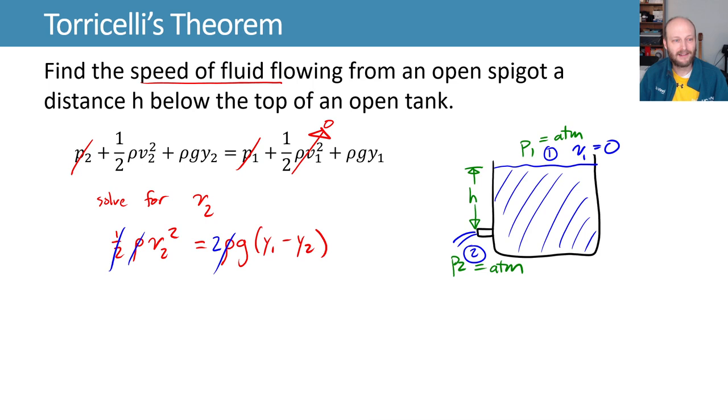We'll move it to the same side, 1 half rho V2 squared is equal to rho G(Y1 minus Y2), and then we'll multiply by 2 and divide by rho to get V2 by itself, and then square root to get V2 is equal to the square root of 2GH.